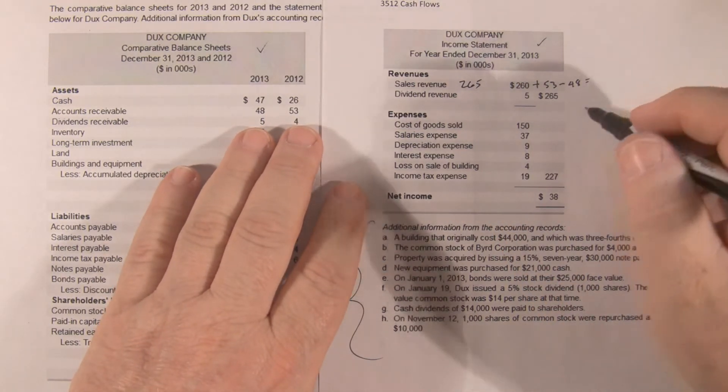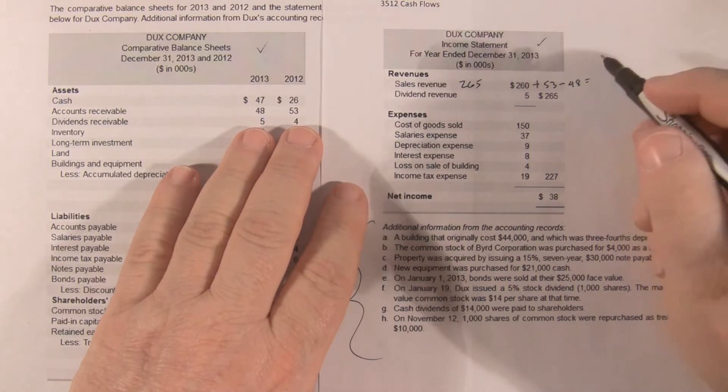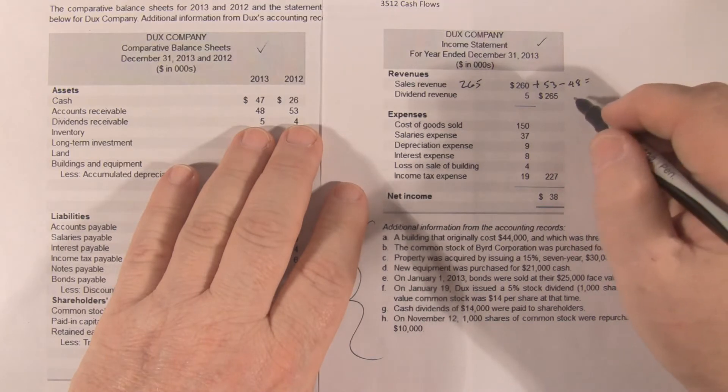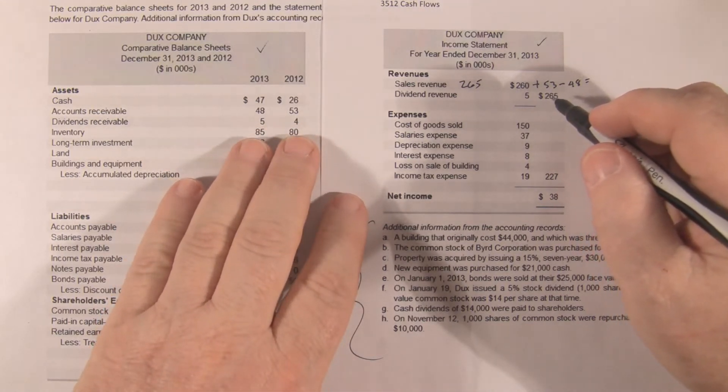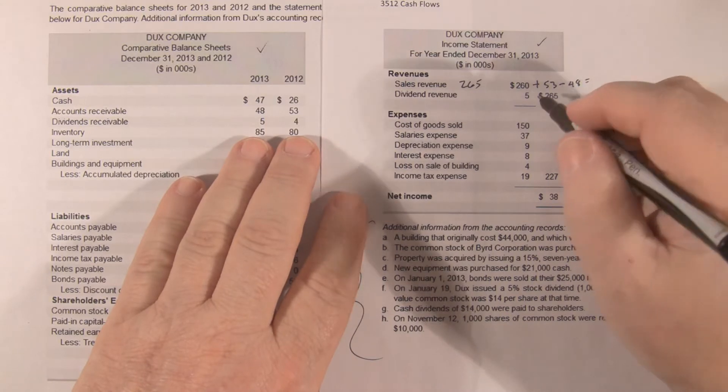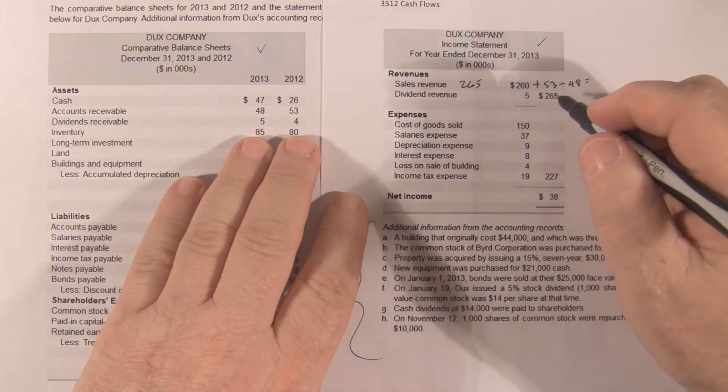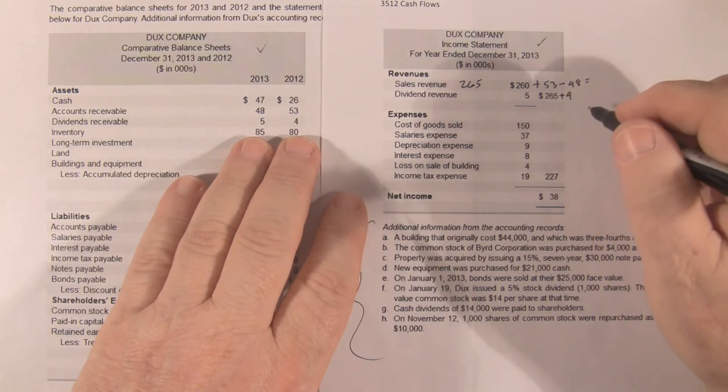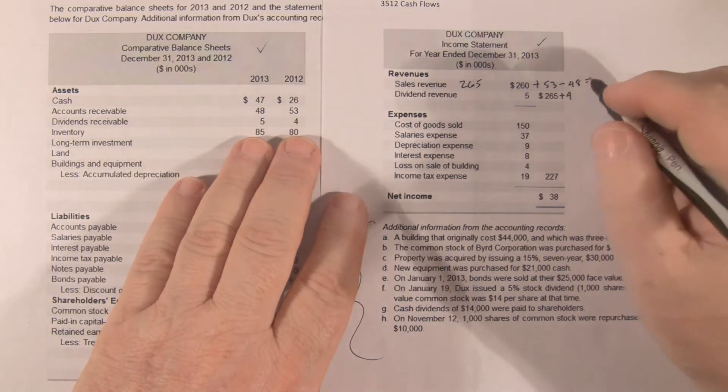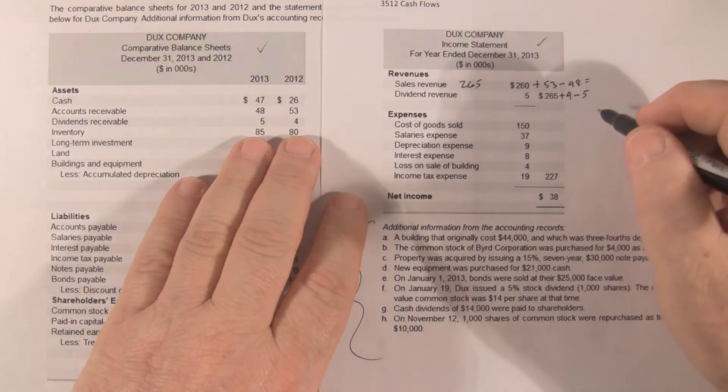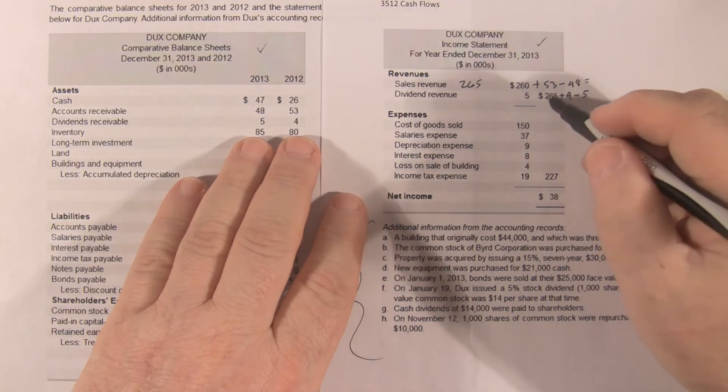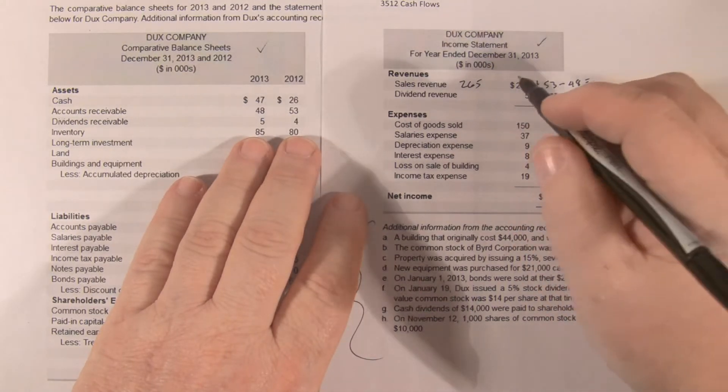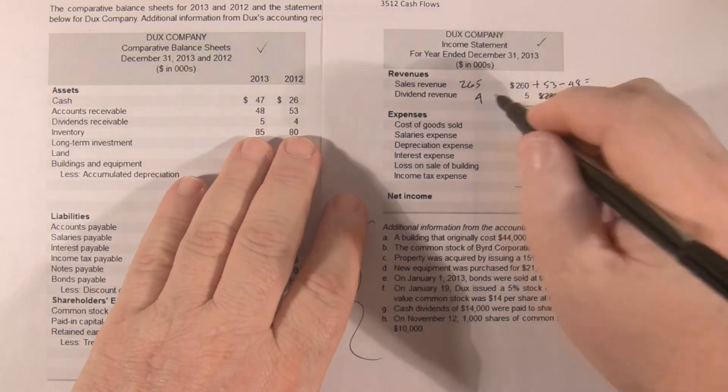Dividend revenue, that probably threw you for a bit of a curve. Same deal. We have our dividend revenue, it's the same as sales. So we start with the 5 plus the beginning, and our beginning dividends receivable was 4. So plus 4, that's the total of 9, minus our ending of 5. So 5 plus 4 minus 5, 4. So our dividend revenue was 4.